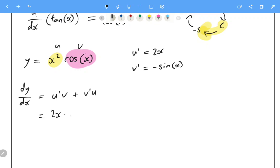So it's going to be 2x times cos of x plus x squared, oh sorry, negative sine of x times x squared.